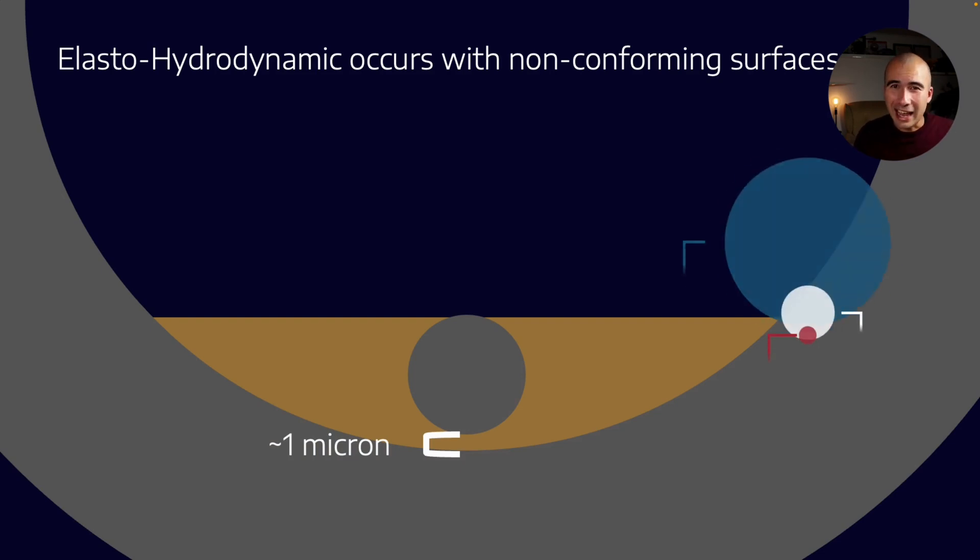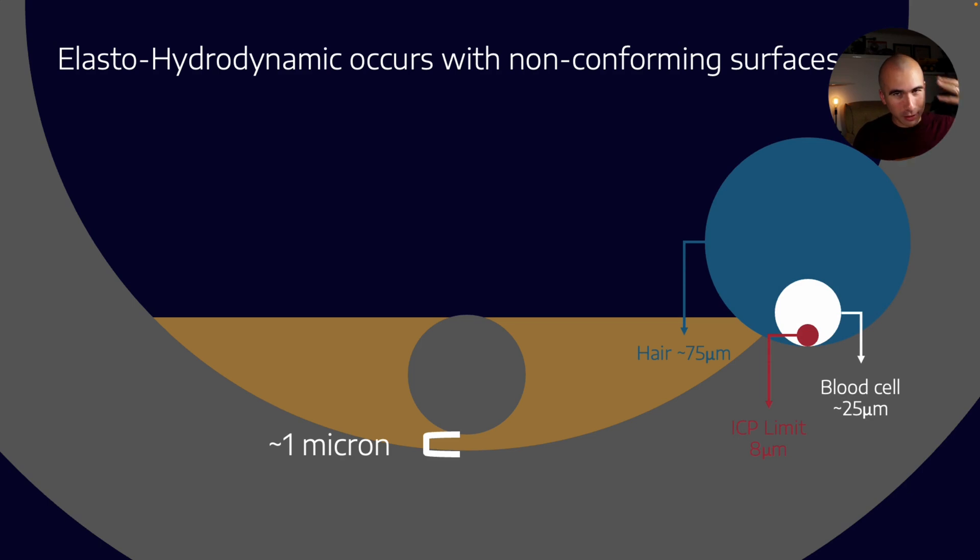Now just for reference, a hair is about 75 microns thick. I'm obviously not an expert in that. But blood cells are about 25 microns, a white blood cell, and the detection limit on the ICP is about 8 microns.